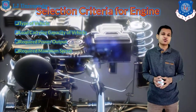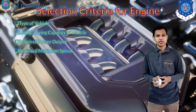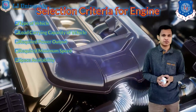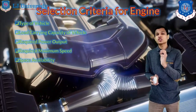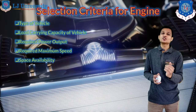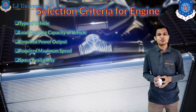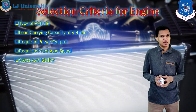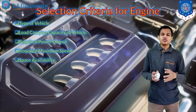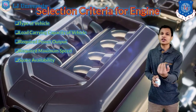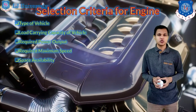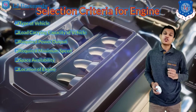The required maximum speed of the two and three wheelers will also be used to select the engine. After that, space availability — how much space is available to store the engine — is important. In two and three wheelers we have limited space, so we need to maintain engine size. If the engine is very large and there is no space to store it, it will not be useful.